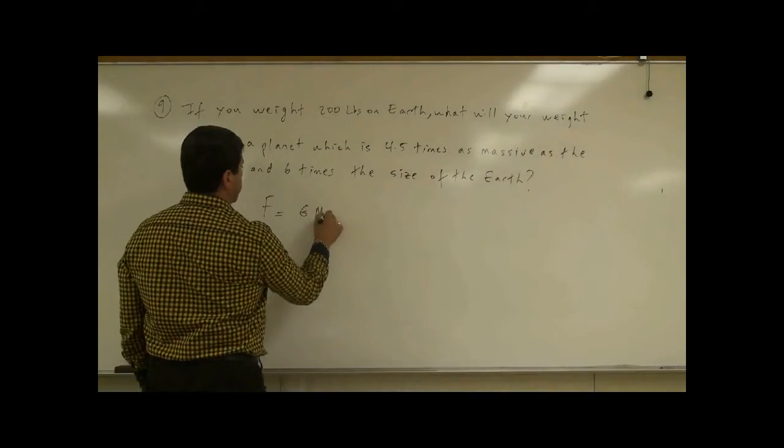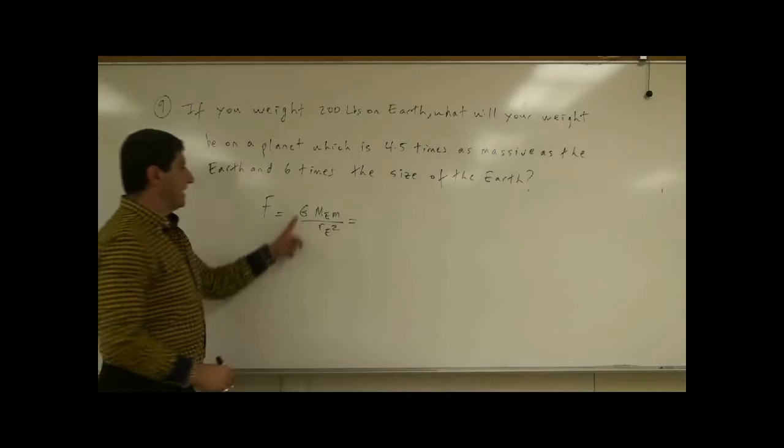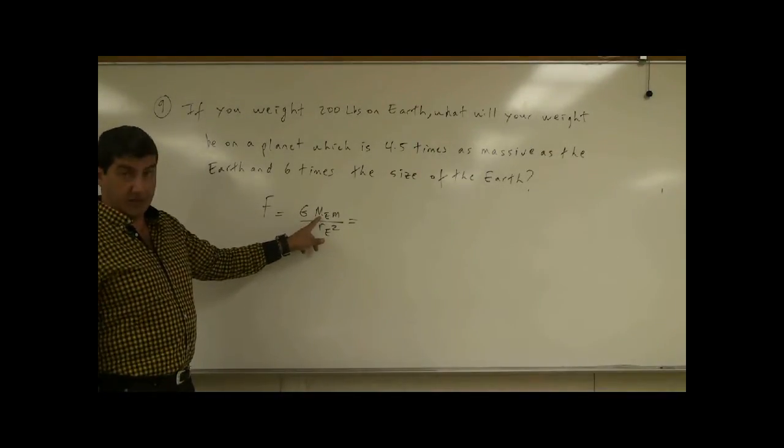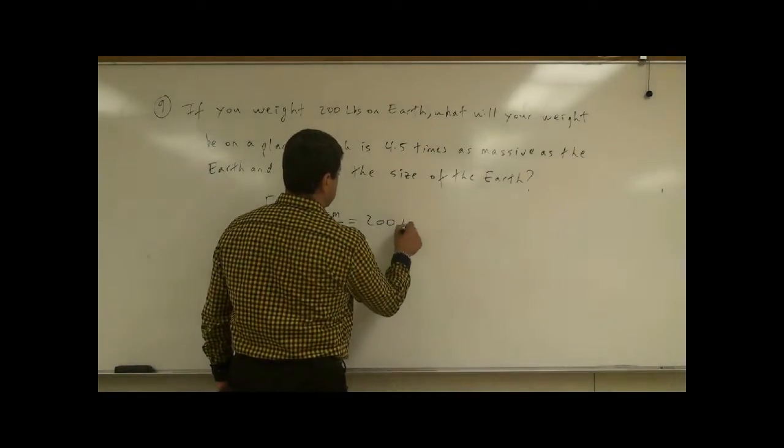F equals G mass of Earth times M over radius of Earth squared. So we're given that if you're standing on the surface of the Earth with the mass of the Earth and the radius of the Earth, that this is 200 pounds.